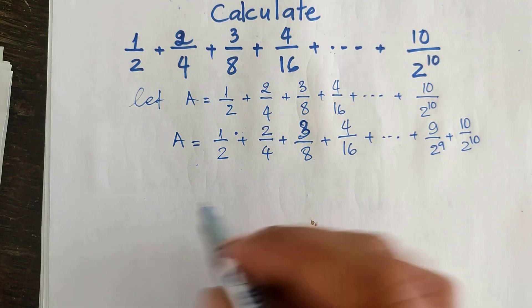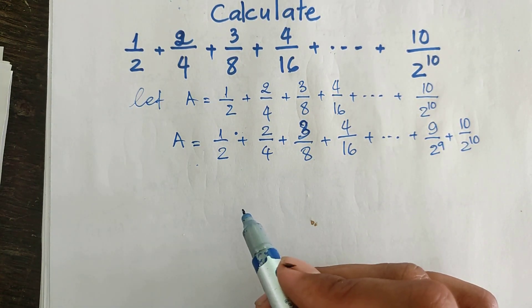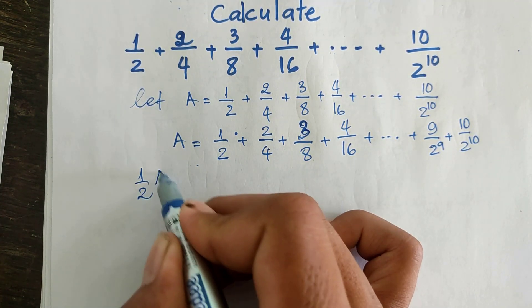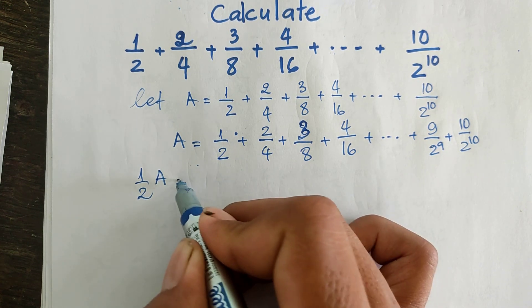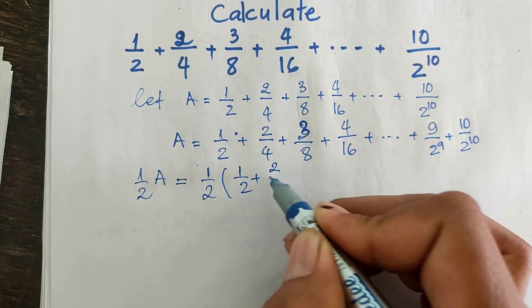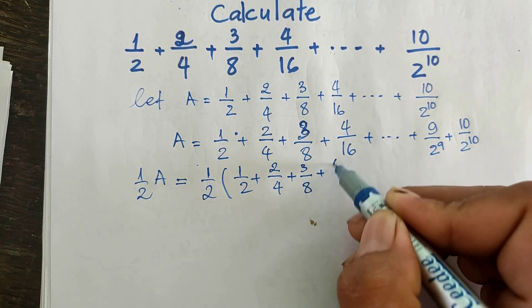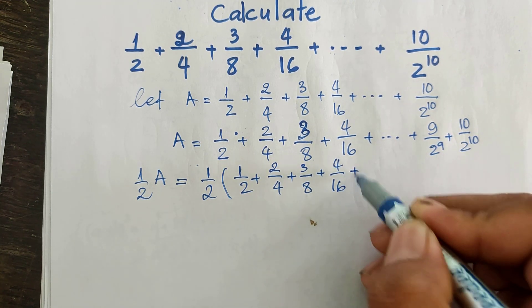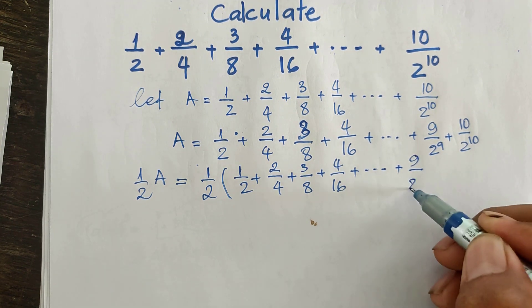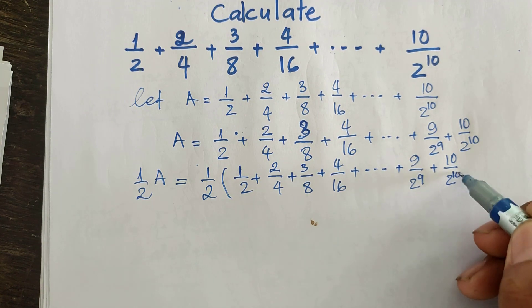Now I multiply both sides of this equation by 1/2. So (1/2)A = (1/2)(1/2 + 2/4 + 3/8 + 4/16 + ... + 9/2^9 + 10/2^10), which gives us 1/4 + 2/8 + 3/16 + ... + 9/2^10 + 10/2^11.